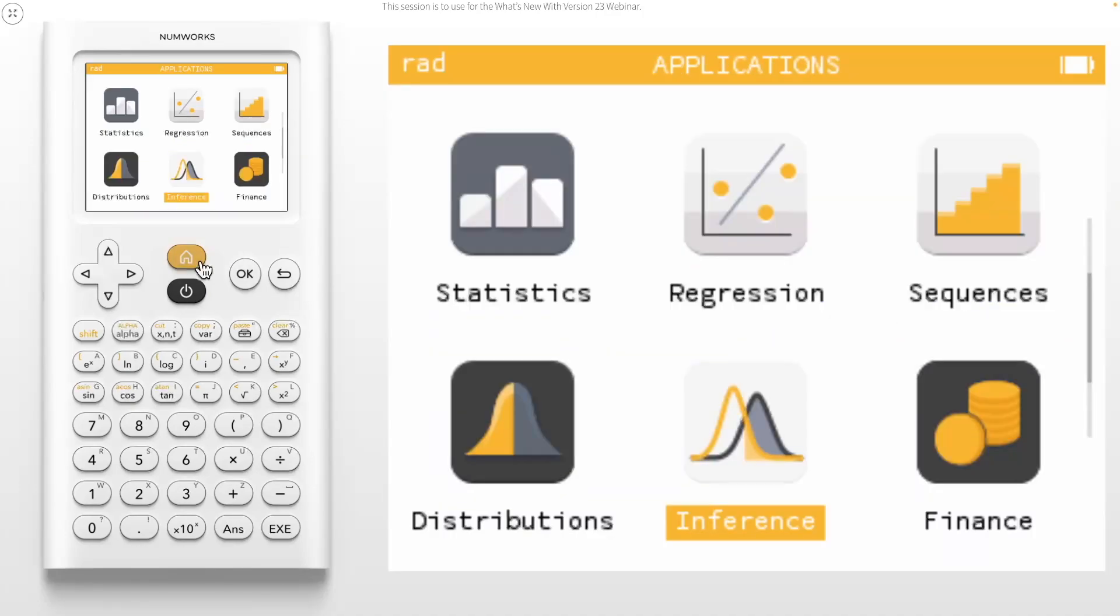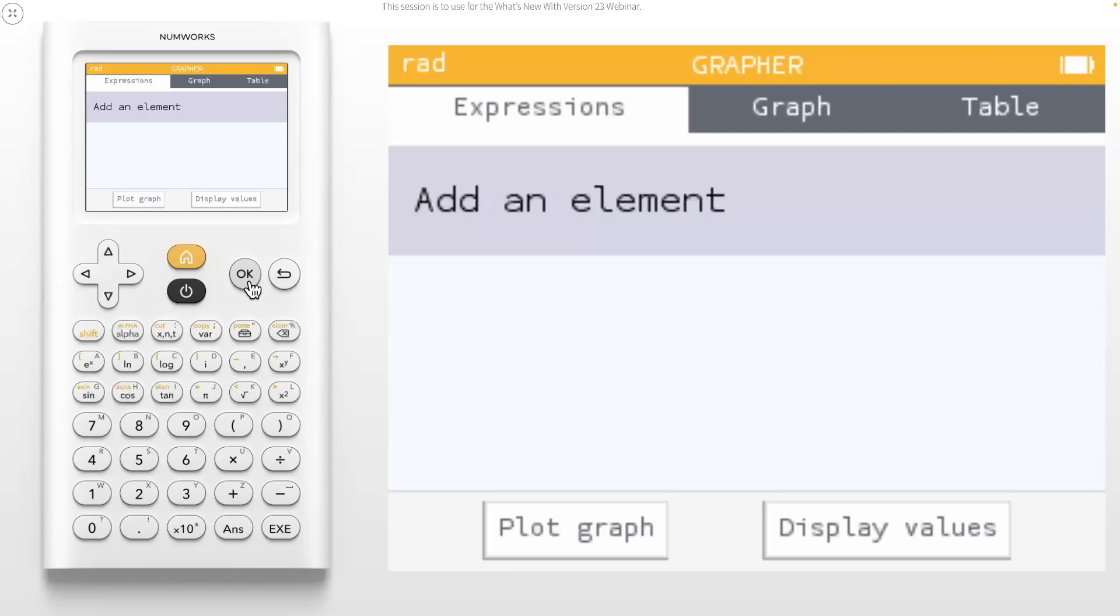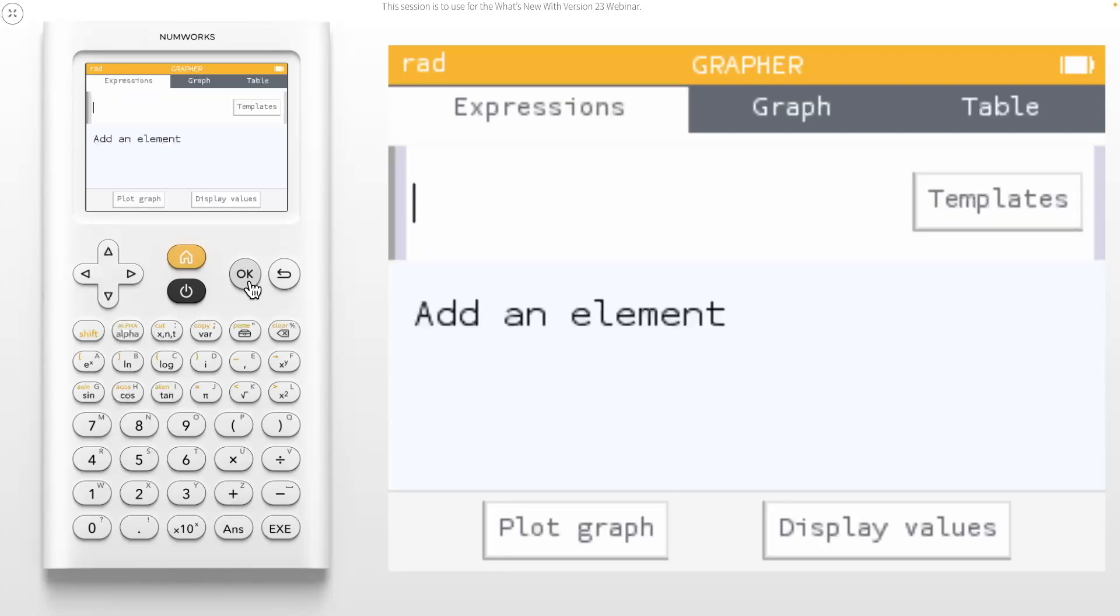For the next features, let's move to the grapher application. To begin, let's press OK to enter a new element. We've made the empty template immediately available so you can begin typing. This makes inputting expressions in any format easy to do. Single variable expressions will default to y equals form.